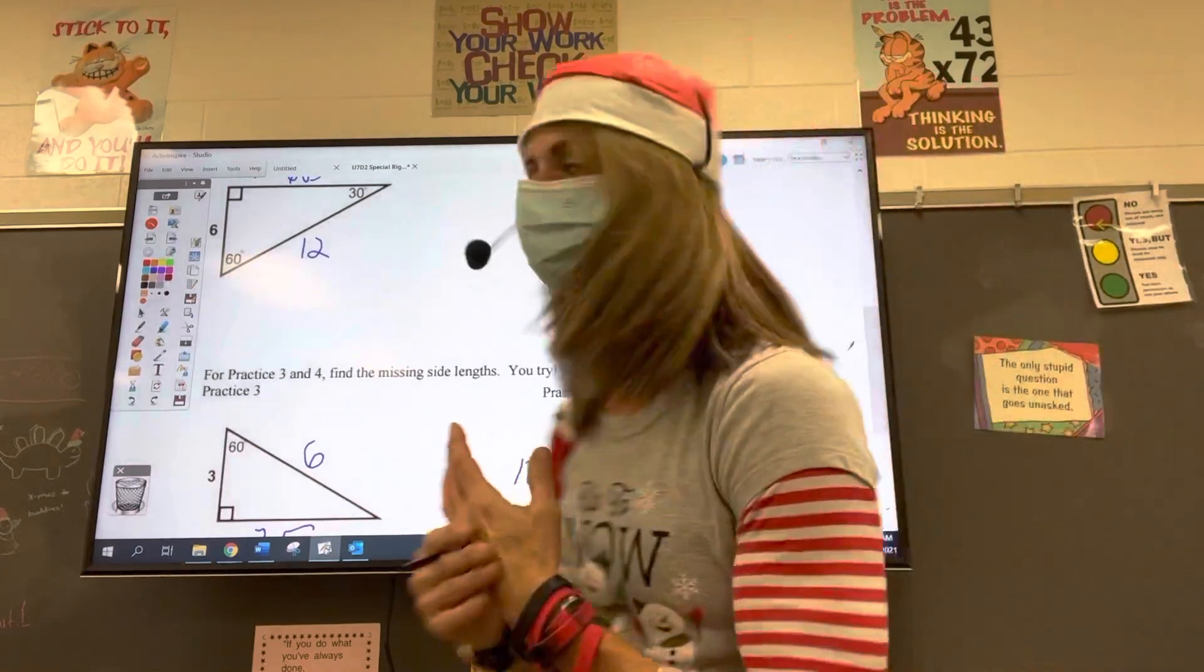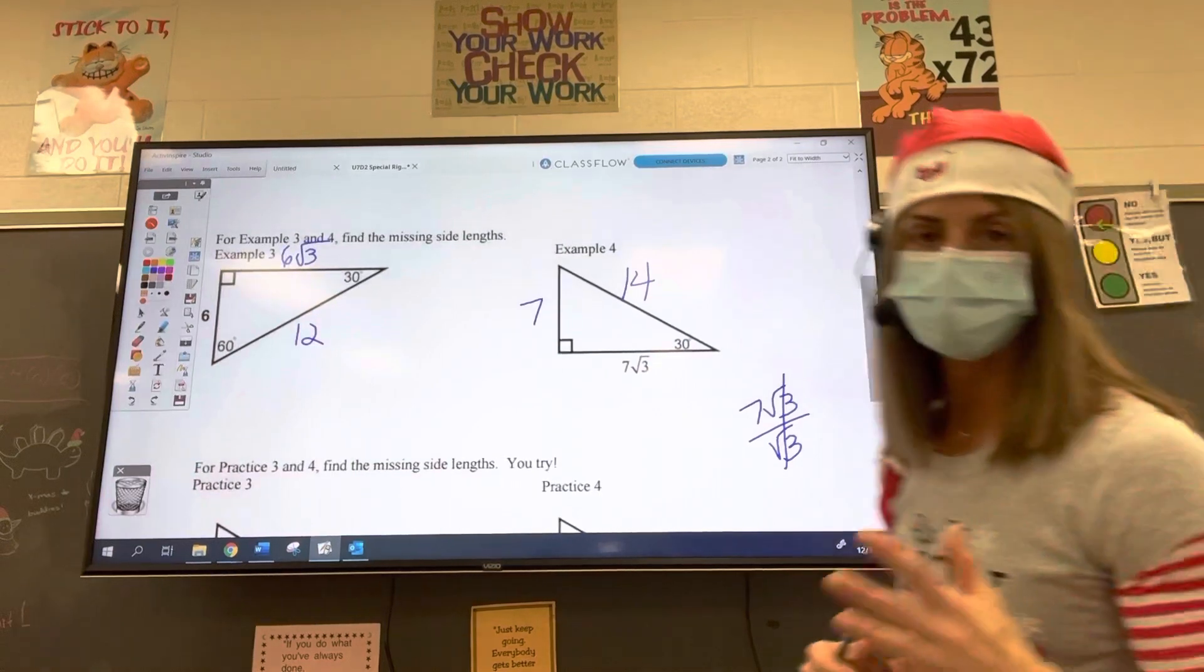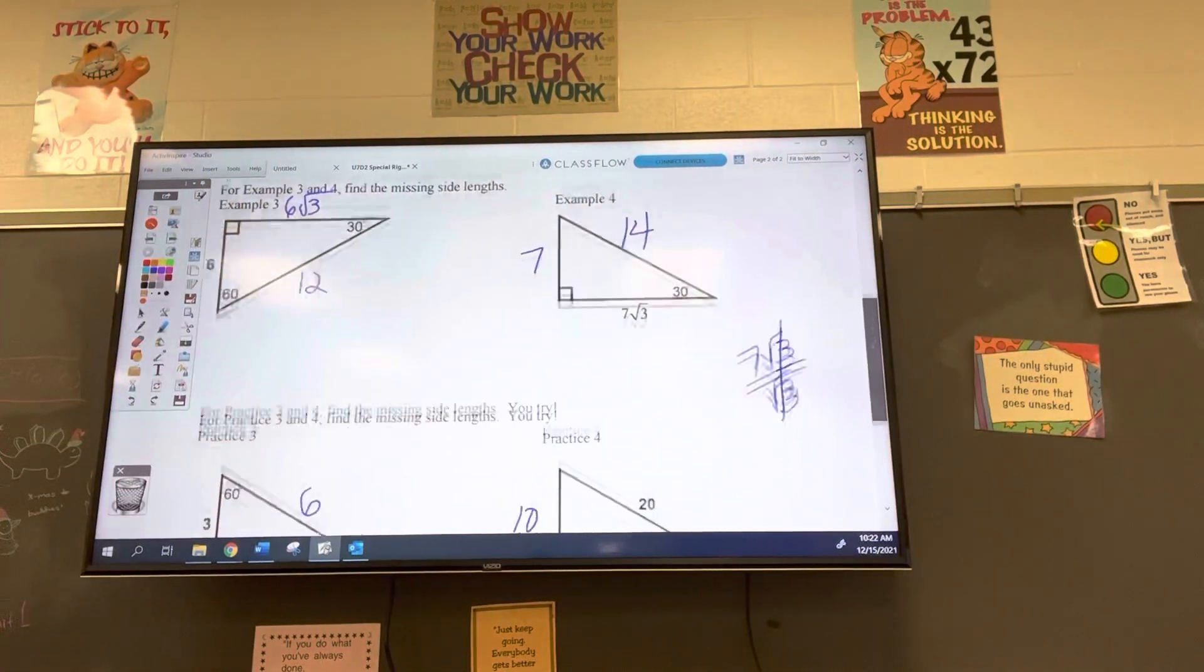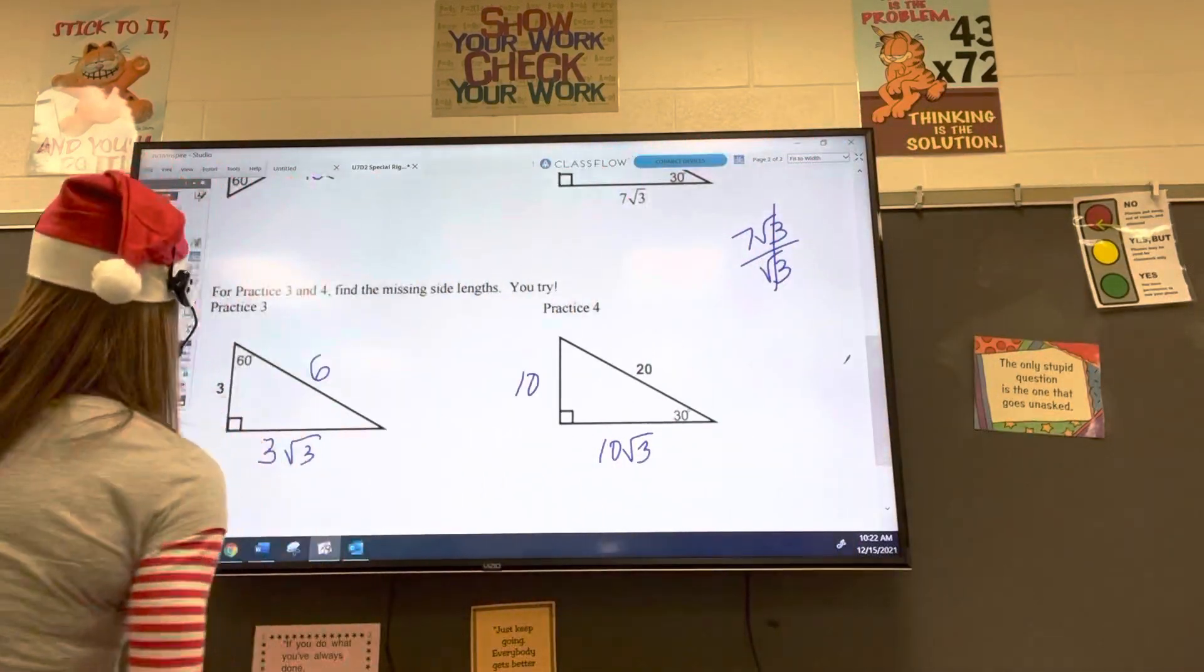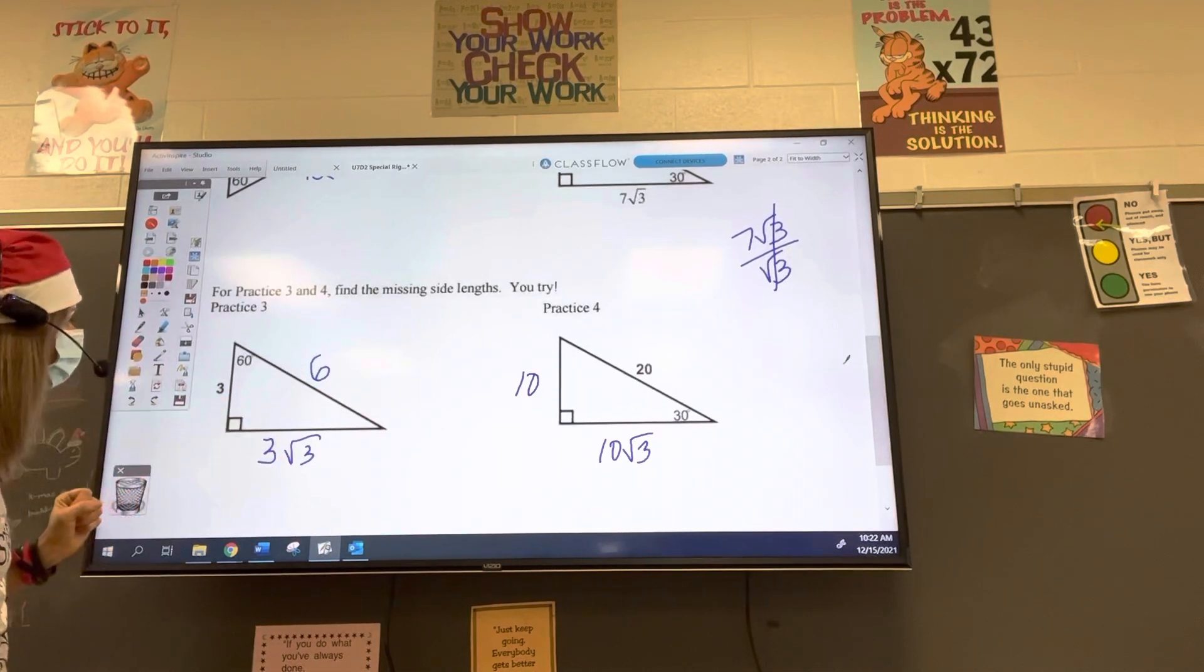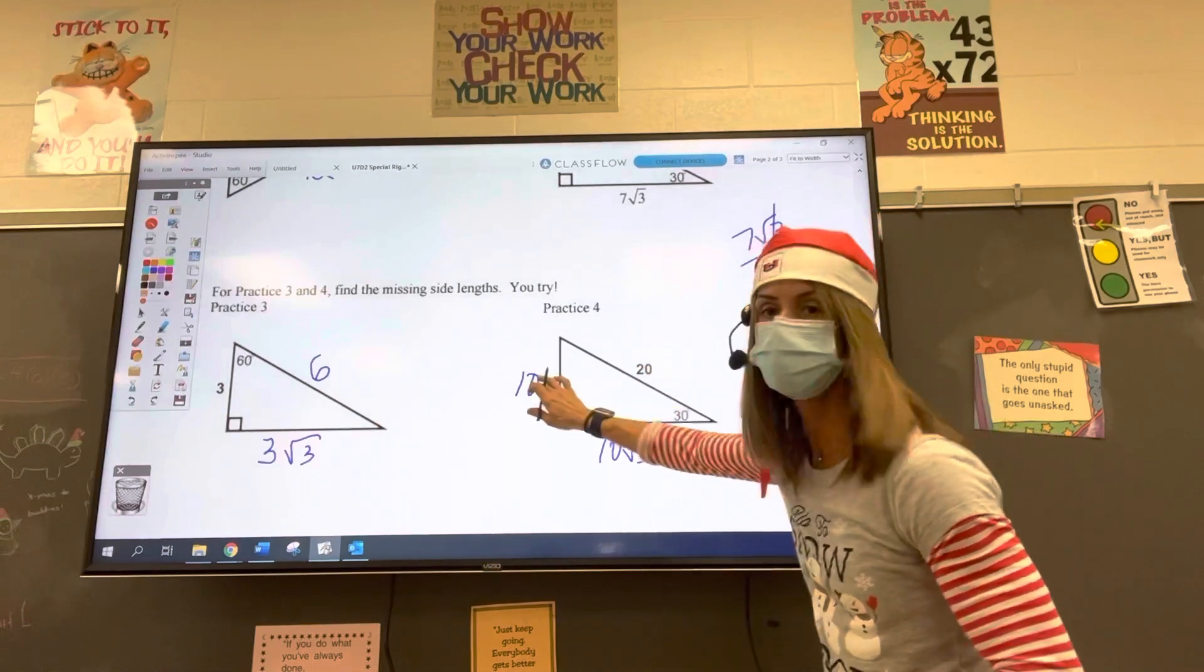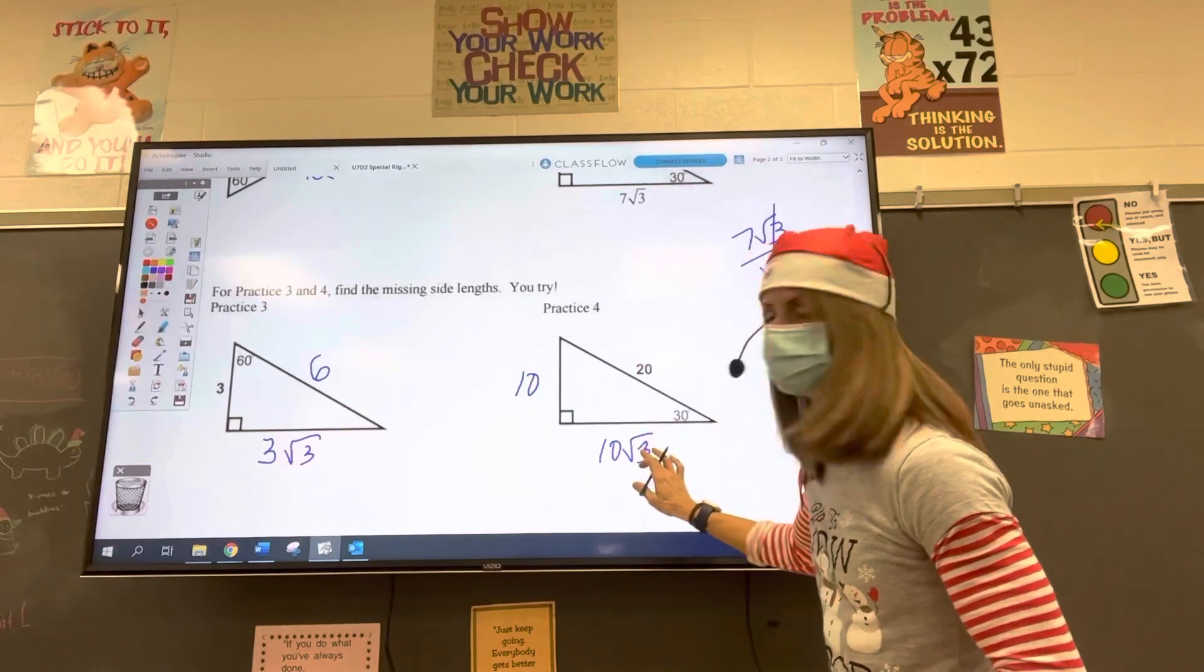All right. So if you guys wouldn't mind. Oh, I showed the answers. I shouldn't be doing that. Pause this video. Do the two practice problems. And I'm going to show you the answers right now. Okay, so practice 3 and 4. Find the missing side lengths. All right, so short side. Times root 3 gives us the long side. Times 2 gives us the hypotenuse. Here in practice 4, we are given the hypotenuse. So we divide by 2 to get the short side. We get 10. And then 10 times root 3 gives us the long side.